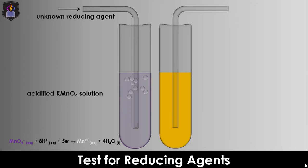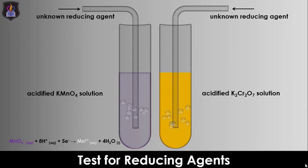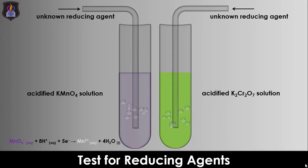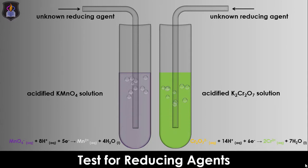Similarly, if we repeat the same test using orange acidified potassium dichromate-6 solution, it will be observed that the color of the solution changes to green, confirming that the unknown substance is a reducing agent. This is because the orange dichromate-6 ions in the solution are reduced to green chromium-3 ions, as seen in the second reduction half equation.